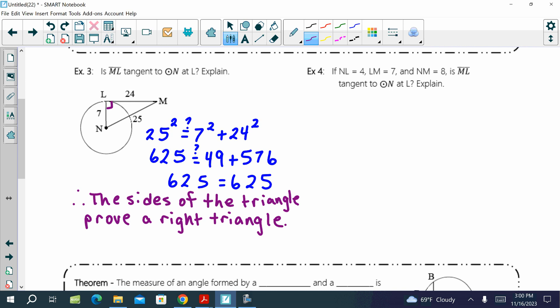Therefore, ML is perpendicular to NL. Without a picture, we can do the same thing.